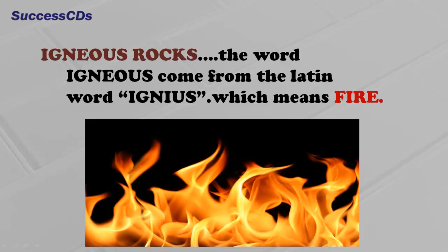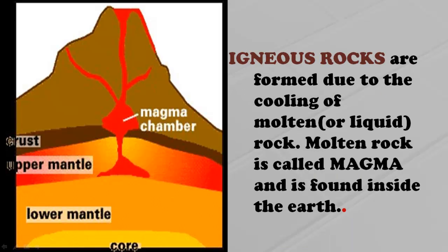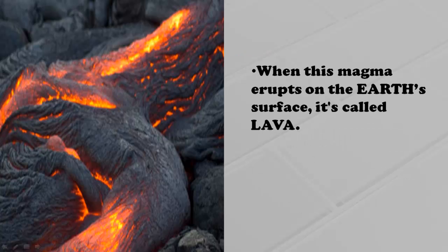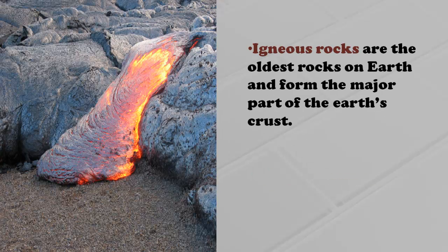Children, the word igneous comes from the Latin word 'igneus' which means fire. Igneous rocks are formed due to the cooling of molten or liquid rock. Molten rock is called magma and is found inside the Earth. When this magma erupts on the Earth's surface, it is called lava. Lava cools on the surface to form igneous rocks.